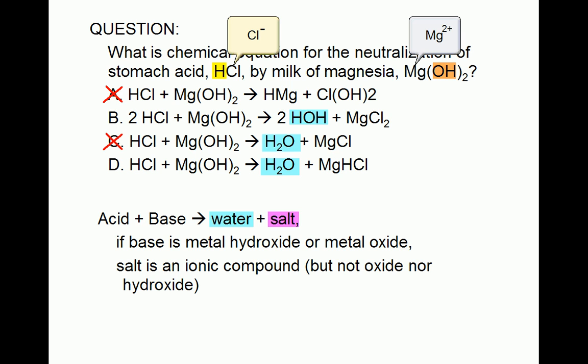Therefore, choices C and D are incorrect, and the correct answer is choice B. Coefficients of 2 are written in front of HCl and HOH in order to balance the equation.